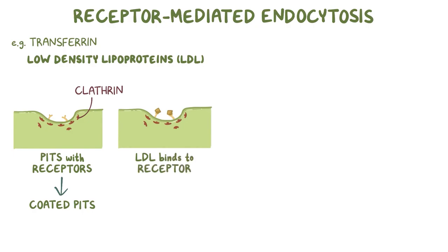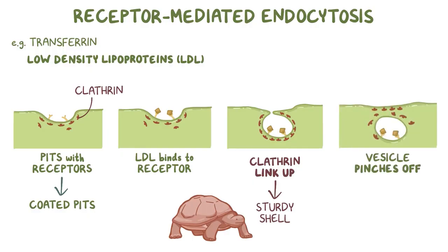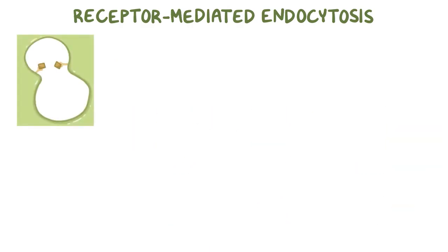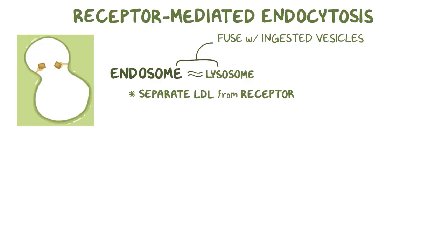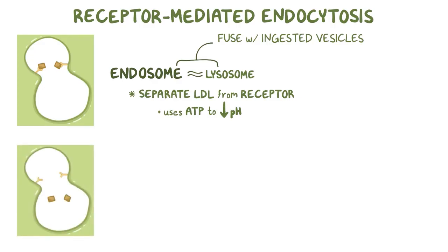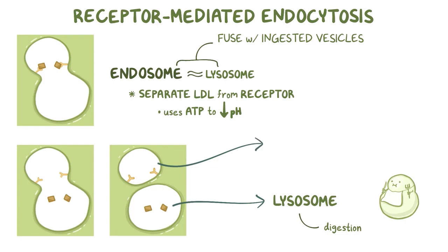Now, let's say LDL binds to its receptor in one of these pits. The edges of the pits start coming together. At the same time, the clathrin proteins inside the cell link up to one another like a sturdy shell around the forming vesicle. Once the vesicle pinches off from the cell membrane, the clathrin proteins detach from it and go back to the cell membrane. Inside the cell, the vesicle merges with an organelle called the endosome. Endosomes are similar to lysosomes in that they also fuse with ingested vesicles, but they can also separate the LDL particle from the LDL receptor it bound to. This is because the endosome has a proton pump that uses ATP to generate a low pH, which causes the LDL to separate from the receptor. At that point, the vesicle splits into two: one which has all of the LDL brought into the cell, and the other that has all of the LDL receptors. The LDL-filled vesicle goes to the lysosome for digestion, while the one containing the receptors goes back and releases the receptors onto the surface of the cell membrane.